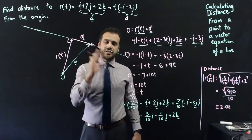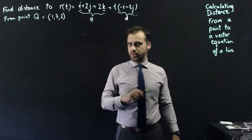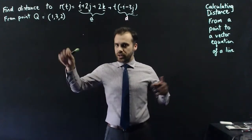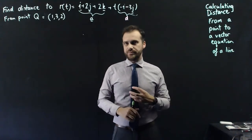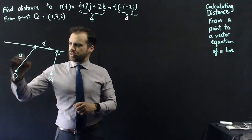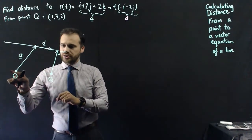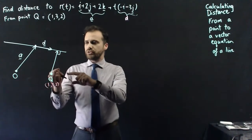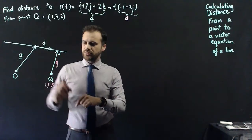But what if I wanted to find the distance from a different point? Here we have a different point. You might want to pause and try to draw a picture of this scenario — the line, the origin, the other point, and how we're going to find that perpendicular. We've got our vector equation, we have a line which is our starting position, that's i plus 2j plus 2k. That's our origin. Now this is our point q, which is (1, 3, 2). What we're trying to find is this vector here, which we'll call q.